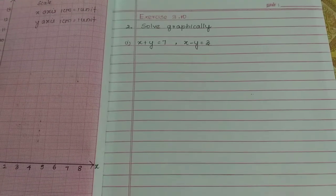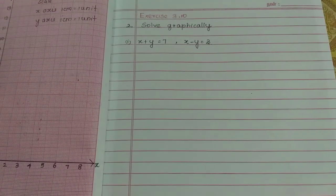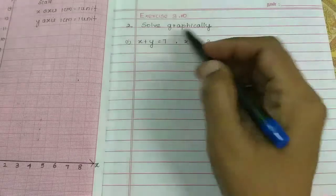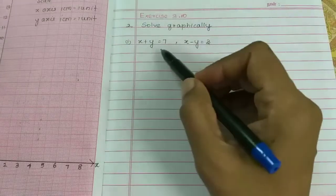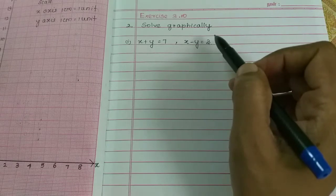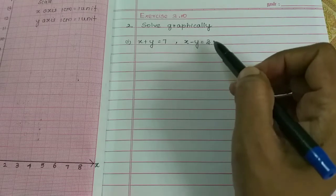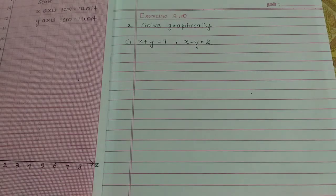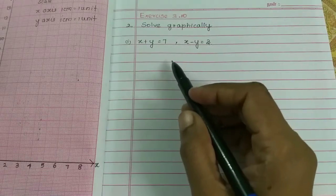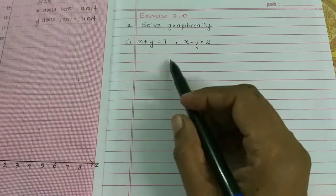Students, in this video we have 3.10 and 2.1 subdivision. Solve graphically: x plus y equal to 7, and x minus y equal to 3. So we have two equations, meaning we have two lines, and the two lines meet at the solution.